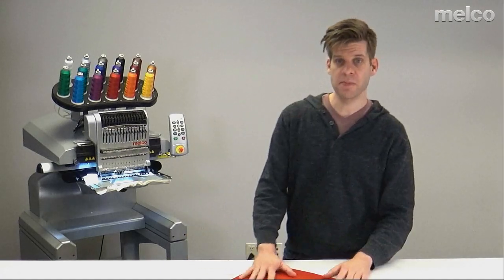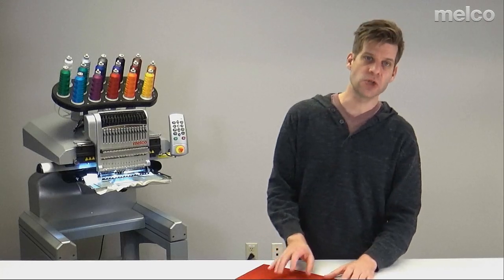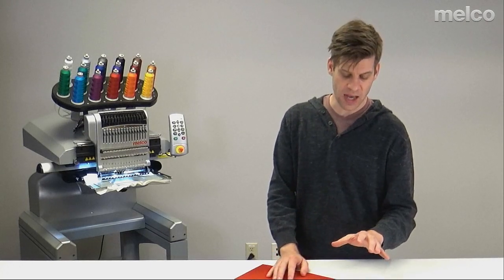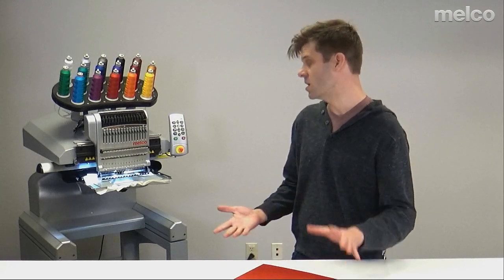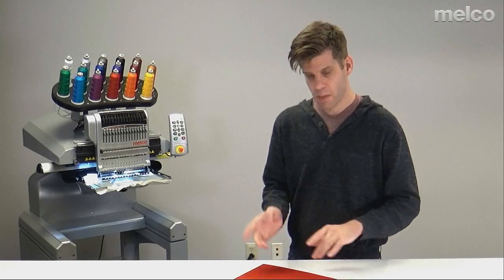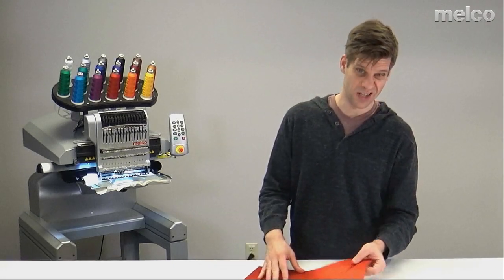Now for my applique material, you can use lots of things. I happen to be using a poly twill. It has a heat sensitive adhesive on the back of it, so it can be an iron on after it's done to make sure it's really secure. But on top of that, it also has a pressure sensitive adhesive, so it's peel and stick, which is kind of nice.